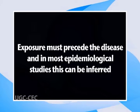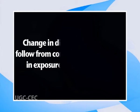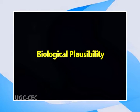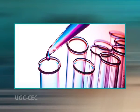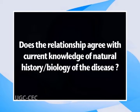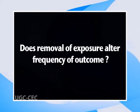Fourth is temporal sequence of association: exposure must precede the disease, and in most epidemiological studies this can be inferred. In studies where exposure and disease are measured simultaneously, or exposure is measured after the occurrence of disease, the temporal association should be evaluated. Fifth is the biological gradient: change in disease rate should follow from corresponding changes in exposure, that is a dose-response relationship. Sixth is biological plausibility: when the association is supported by evidence from clinical research or basic science — for example toxicology or microbiology — about biological mechanisms, an inference of causality is strengthened. Seventh is coherence: does the relationship agree with the current knowledge of the natural history or biology of the disease? And eighth is experiment: does the removal of the exposure alter the frequency of the outcome?